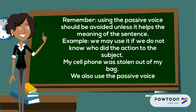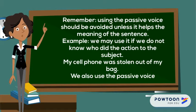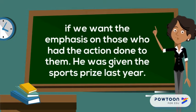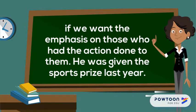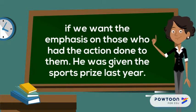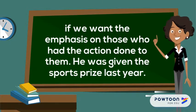For example, we may use it if we do not know who did the action to the subject: 'My cell phone was stolen out of my bag.' We also use the passive voice if we want the emphasis on those who had the action done to them: 'He was given the sport prize last year.'